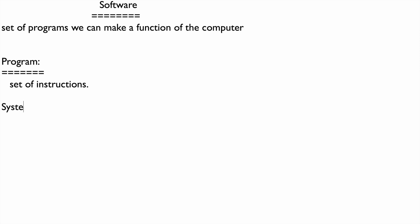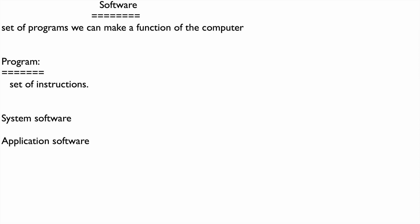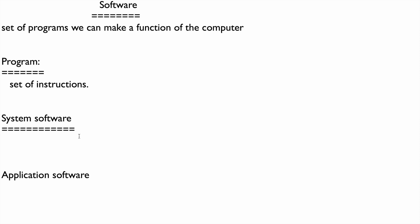There are two types of software. First is system software. System software is used only for system purposes. Without system software, we cannot run our computer.